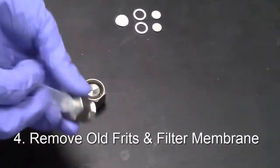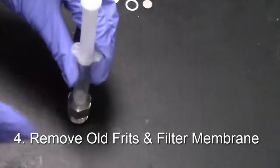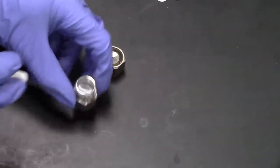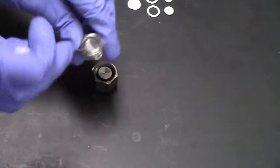Step 4. Remove old frits and filter membrane. Use the syringe to pop out the old frits and filter membrane. Additional tools, such as a screwdriver, may be helpful in removing the old contents.